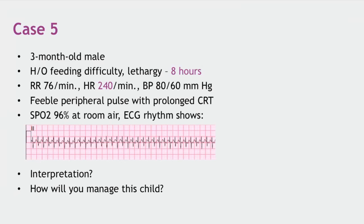Common pitfalls in arrhythmia management in children: the first major pitfall is not identifying arrhythmia in the first place. Every critically sick patient should have ECG electrodes attached and continuous ECG monitoring. Arrhythmias are not rare — tall T waves and abnormal patterns can be seen. Also, one should not rely only on monitor ECG; a full 12-lead ECG is essential.